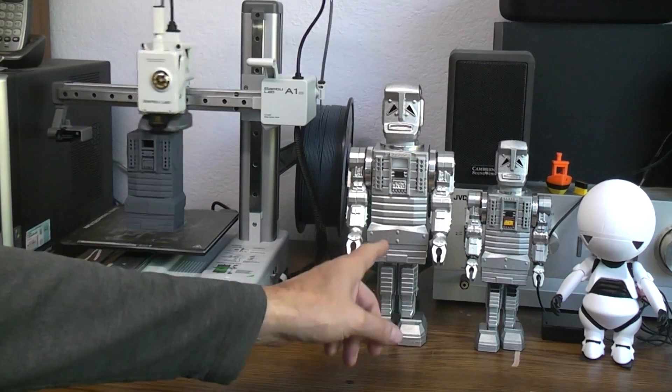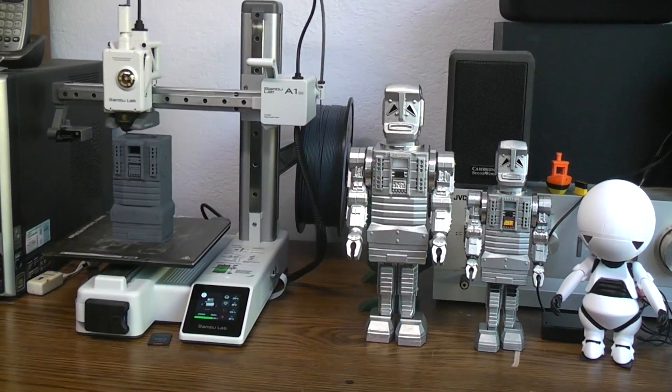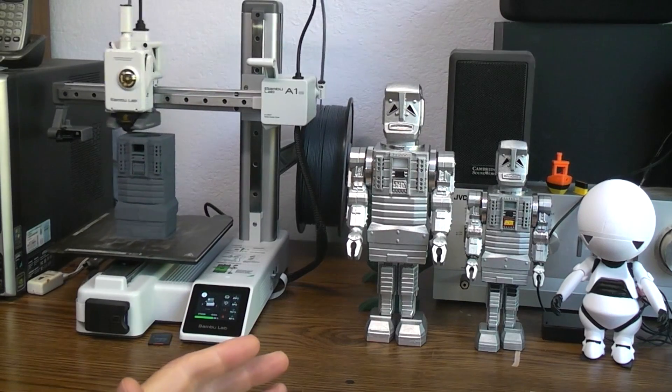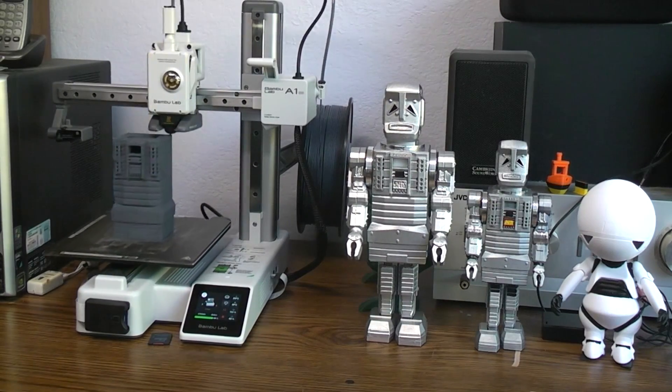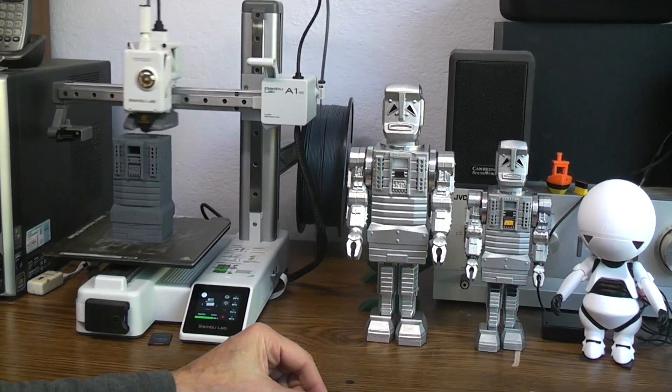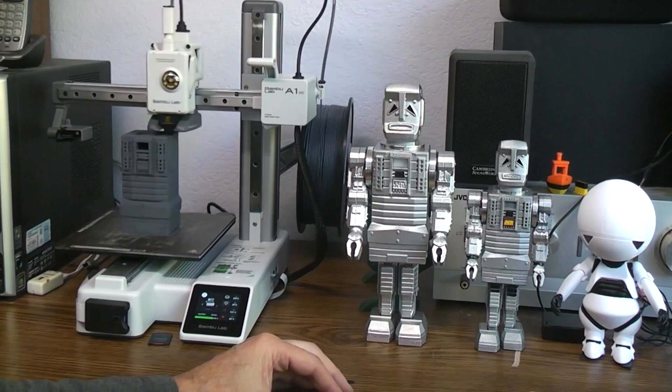This particular body that's on here was printed on my Prusa MK3S, and it took 9 hours and 20 minutes to print in a very standard mode. 0.2 layer height, standard quality.